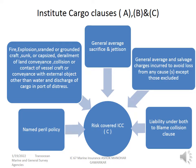It is a named peril policy — very limited risks are covered under that. Liability under the both-to-blame collision clause is covered. General average and salvage charges incurred to avoid loss from any cause except those excluded are also covered. The exclusions for A, B, and C are all the same, starting from clause 4.1 — misconduct, etc. Only C and B are named peril policies. A is an all risk policy. Try to understand: it is an all risk policy, not an all loss policy.